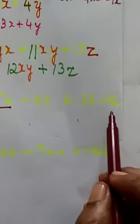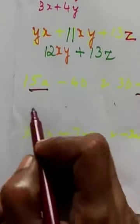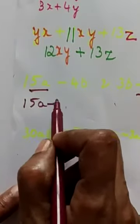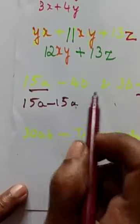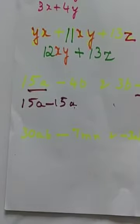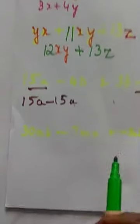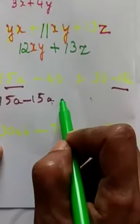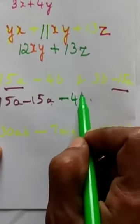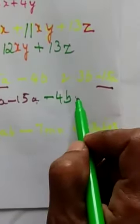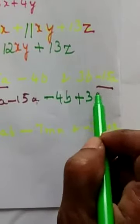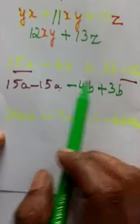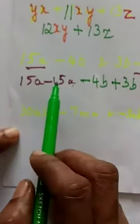You have to collect the like terms. 15a and minus 15a, they are like terms, isn't it? Minus 15a. It seems it is quite easier, isn't it? Minus 4b plus 3b. Observe the sign very carefully.